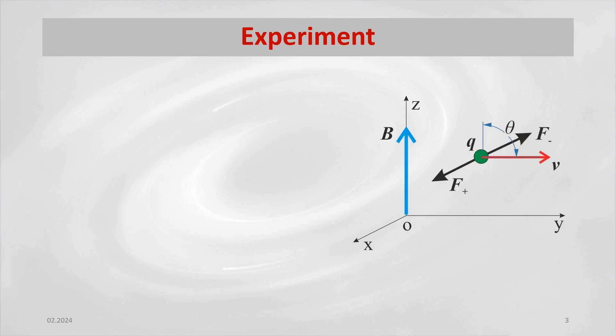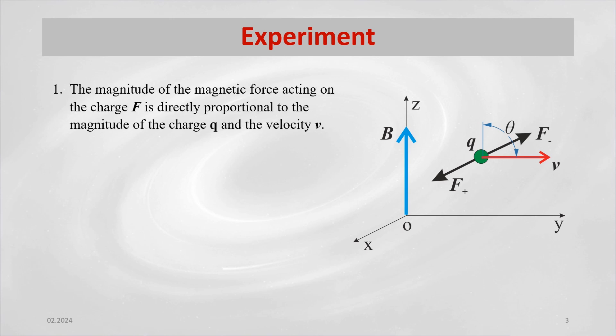To express and describe the formation of the magnetic field, an electrically charged mass point with an electric charge q is used, which moves with a mean velocity. From experiments, we can document the following behavior. 1. The magnitude of the magnetic force acting on the charge f is directly proportional to the magnitude of the charge q and the velocity v.